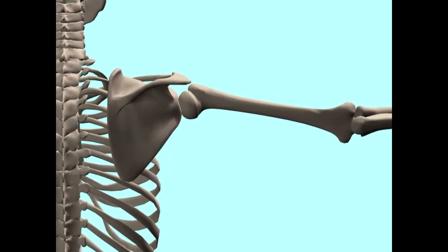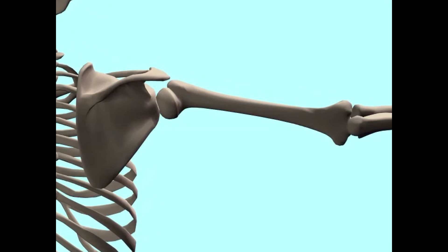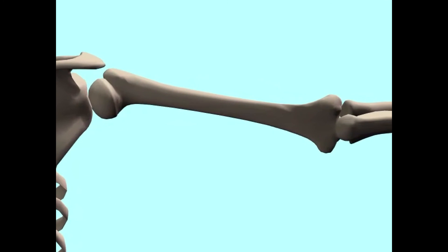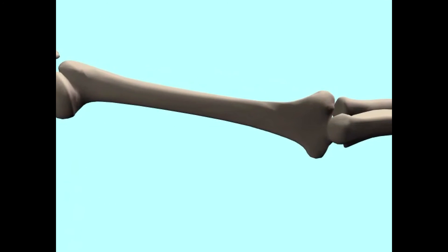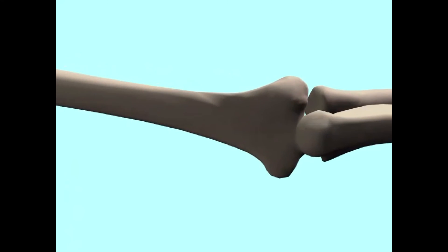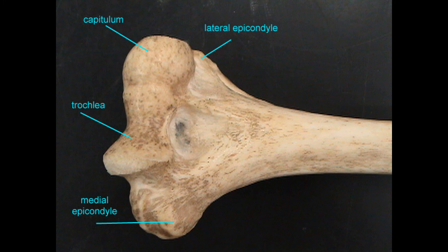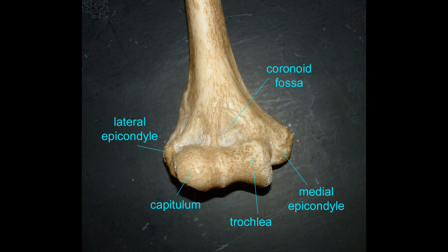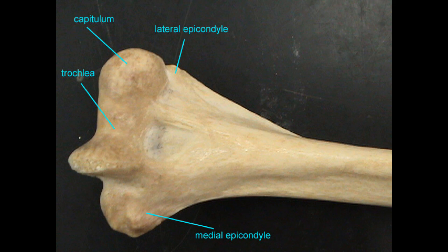The two condyles at the distal end of the humerus articulate with the two bones of the forearm. The medial trochlea articulates with the trochlear notch of the ulna, and the lateral capitulum articulates with the head of the radius.